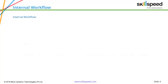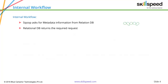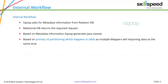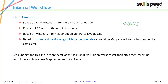If you look at the internal workflow of Scoop, when you try to import a table — that is, when you want to copy the table from the RDBMS to Hadoop — as a first step, Scoop will ask for the metadata from the relational database. The RDBMS will return the metadata of the table or database you're trying to import. Based on the metadata, Scoop will generate the Java class. Based on primary ID, partitioning happens as multiple mappers will be importing data at the same time. You can also manually specify the number of mappers during the import process.